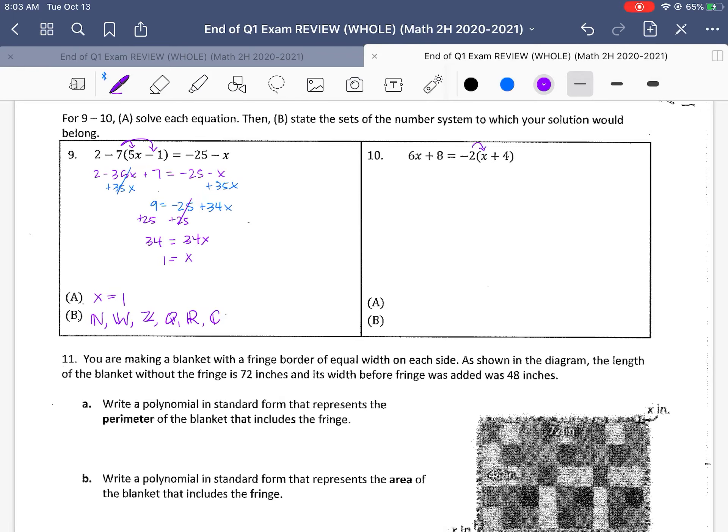Number 10, same idea. So we're going to distribute this negative 2. So we get 6x plus 8 on the left. We get negative 2x minus 8 on the right. And then we move some things around. So we add 2x here, add 2x here. We get 8x plus 8 is equal to negative 8. We add 8. Oh, let's not do that. Let's go the other way. We minus 8 from the left side. So we get 8x is equal to negative 16. Divide by the 8 there, and we get x is equal to negative 2. So again, x is a negative value on this one. So it's not a natural or a whole number. This starts in the integers, and then it's rational and real and complex.